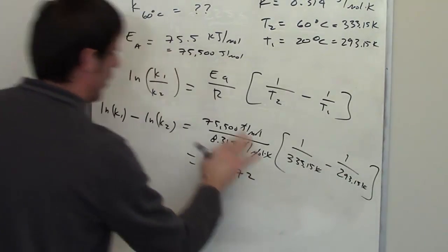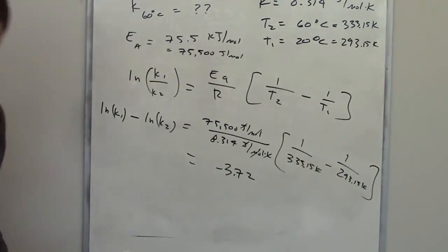What I ended up getting was negative 3.72 for all this stuff here on the right side. You can double check that on your calculator.